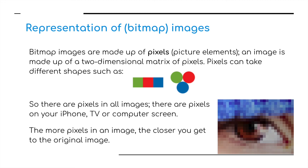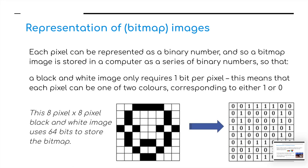The more pixels in an image, the closer you get to the original image. Each pixel, each little tiny square, can be represented as a binary number, and so a bitmap image is stored in a computer as a series of binary numbers. A black and white image only requires one bit per pixel to store its information, meaning each pixel can be one of two colors corresponding to either a one or a zero.